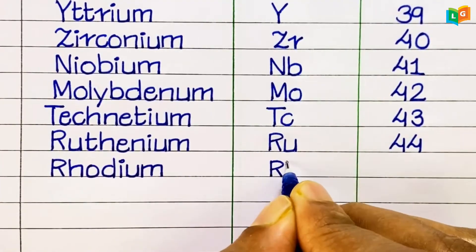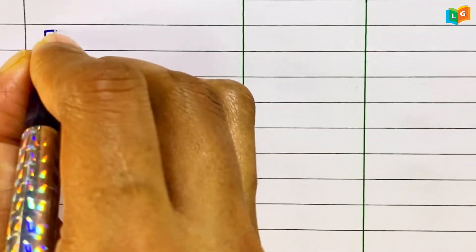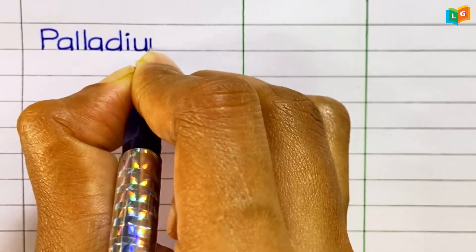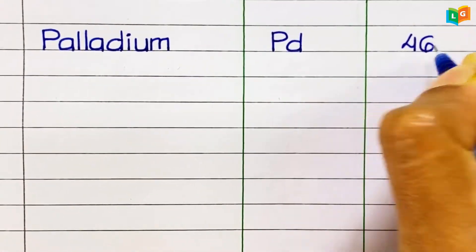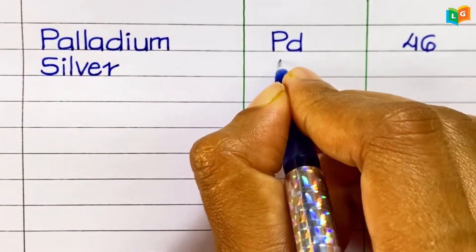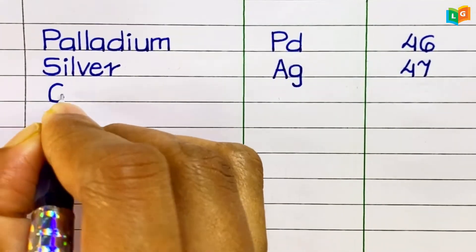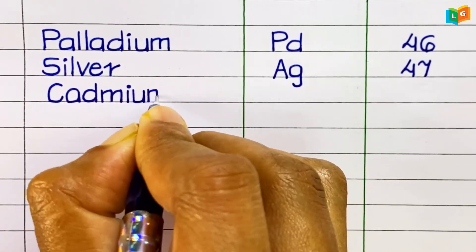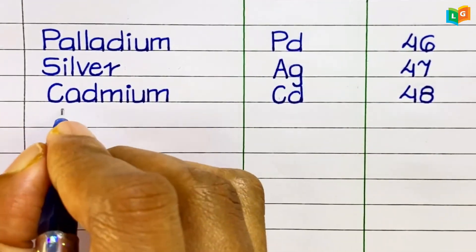Rhodium, symbol Rh, atomic number 45. Palladium, symbol Pd, atomic number 46. Silver, symbol Ag, atomic number 47. Cadmium, symbol Cd, atomic number 48.